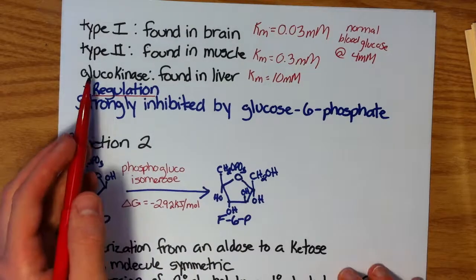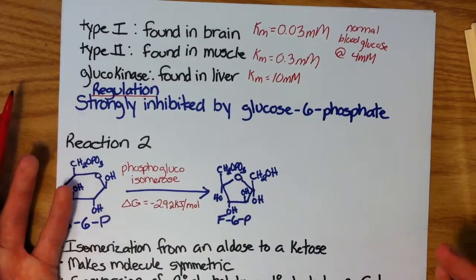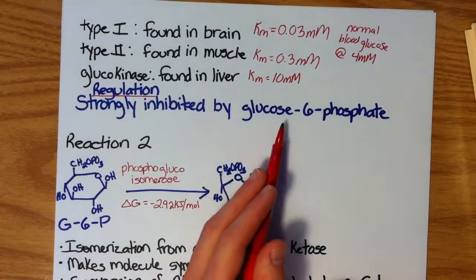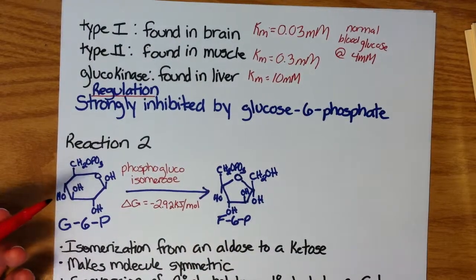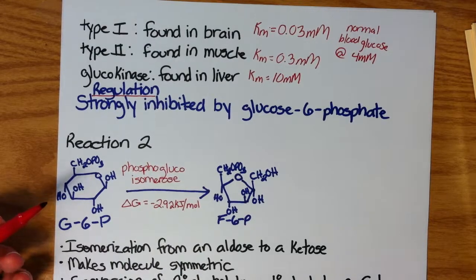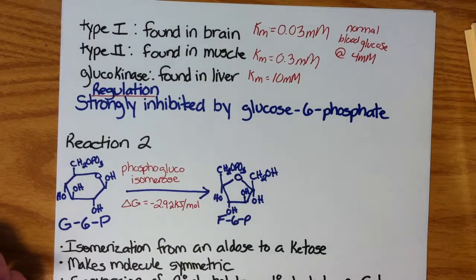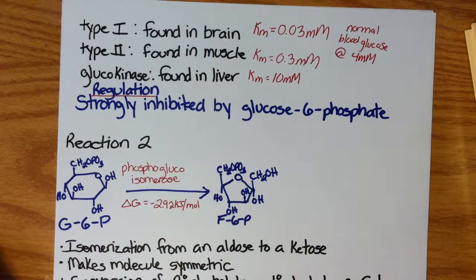Back to regulation, hexokinase is strongly inhibited by its product, a negative feedback mechanism, by glucose 6-phosphate. Makes sense. If we have excess glucose 6-phosphate, why are we going to make even more? Let's utilize what we have first before we make more.